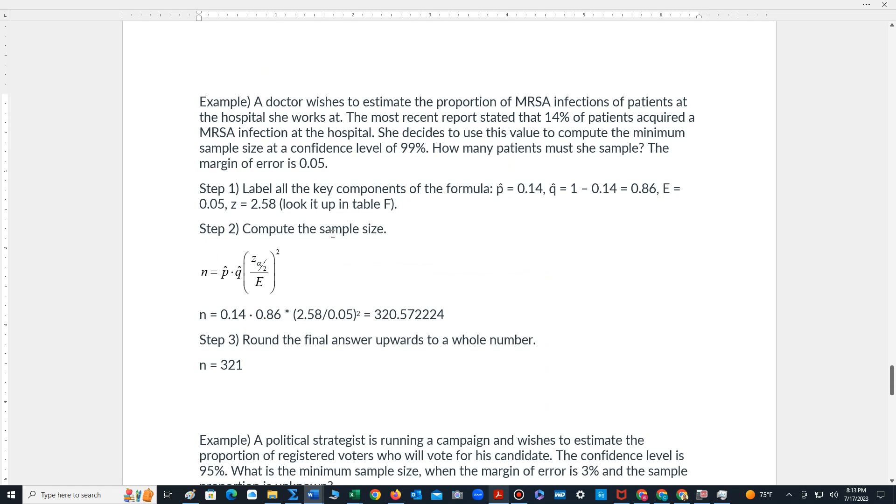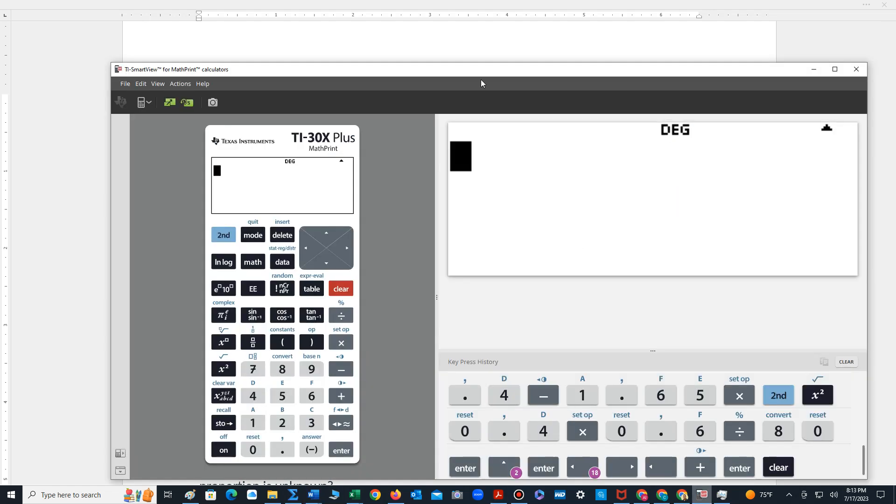Now we're going to plug this information into our formula. So the minimum sample size for a proportion is P-hat times Q-hat times Z sub alpha over 2 divided by E squared. So we know P-hat is 0.14, Q-hat is 0.86, Z is 2.58, E is 0.05 quantity squared. We can type that in a calculator.